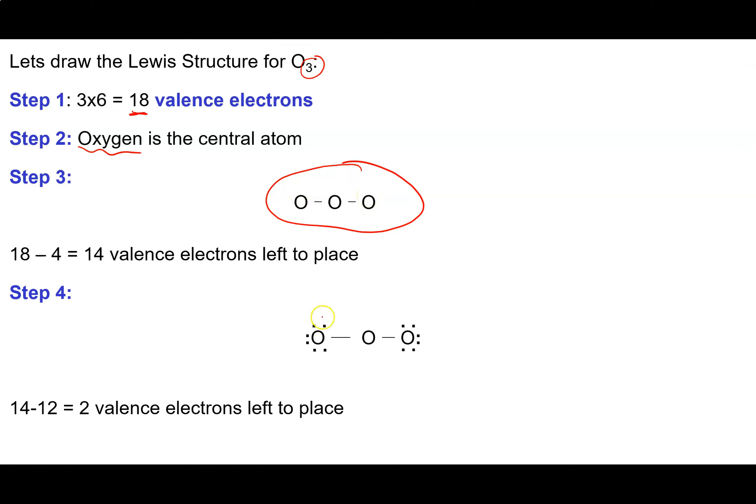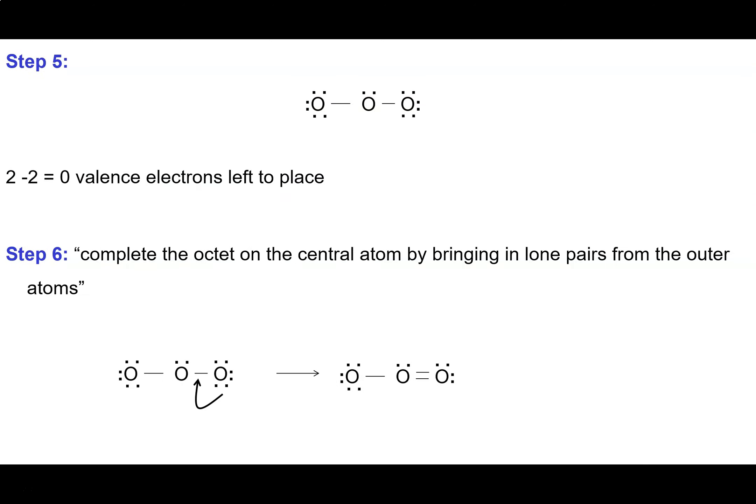There's our central atom and then we've got our 2 outer oxygen atoms. Our next step is to complete the octets on our outer atoms, and we do that by placing 3 lone pairs on each of them. Then we have 2 electrons left over at that point, and they're going to go on our central atom.